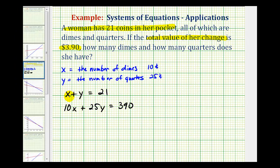So if we wanted to eliminate the x terms, we would want this first term here to be negative 10x. So what we'll do is multiply the first equation by negative 10, then leave the second equation the same.